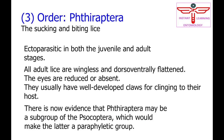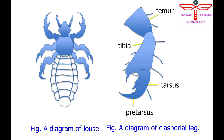Order Theroptera — the sucking and biting lice — are ectoparasitic in both the juvenile and adult stages. All adult lice are wingless and dorsal-ventrally flattened. The eyes are reduced or absent. They usually have well-developed claws for clinging to their host.